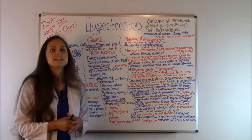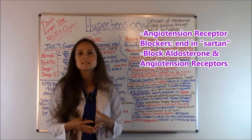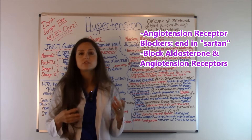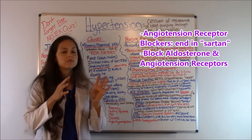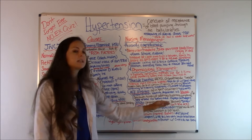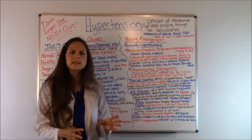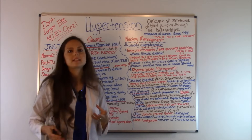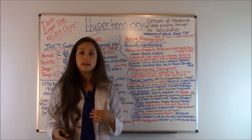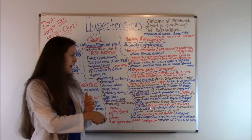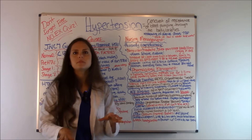ARBs — angiotensin receptor blockers — are drugs ending in -sartan, like losartan. They block aldosterone and angiotensin receptors to lower blood pressure. Typically if a patient can't tolerate an ACE inhibitor due to the dry cough, they'll be placed on an ARB. ARBs generally have the same side effects as ACE inhibitors, except for the dry cough.